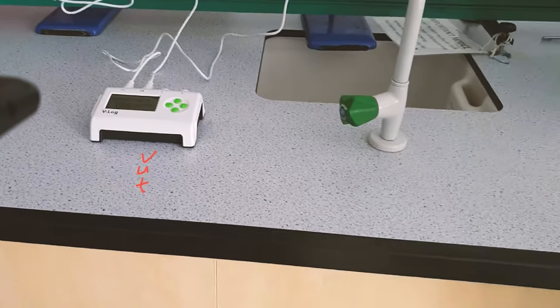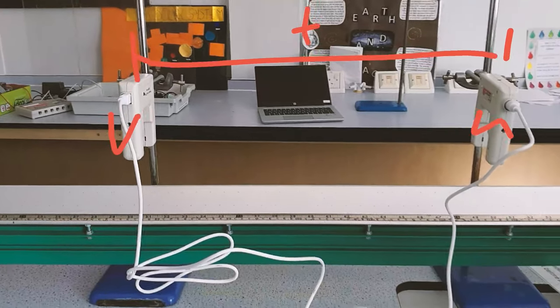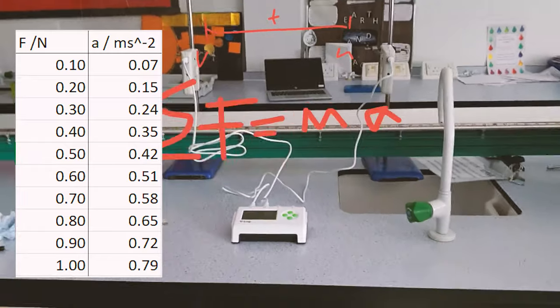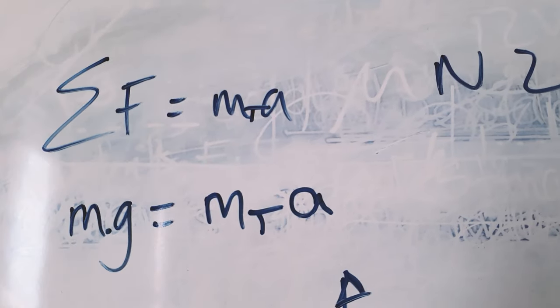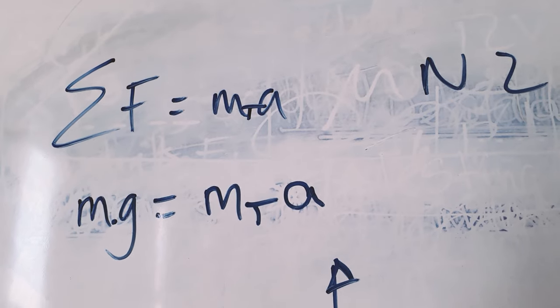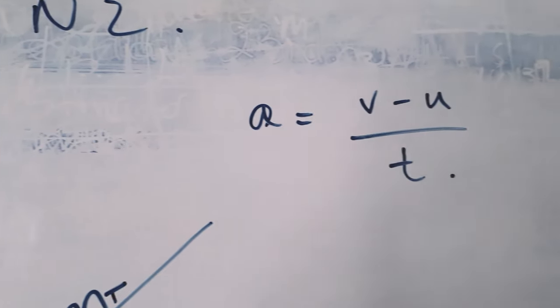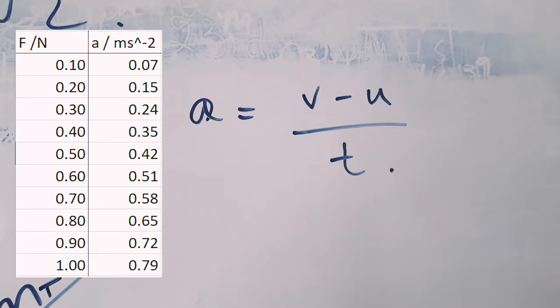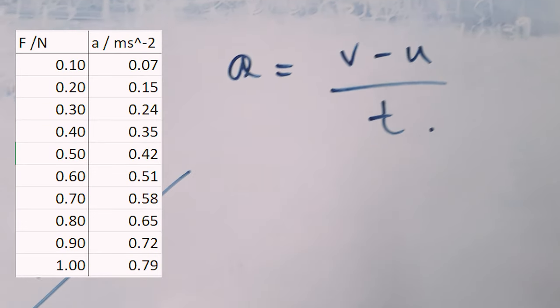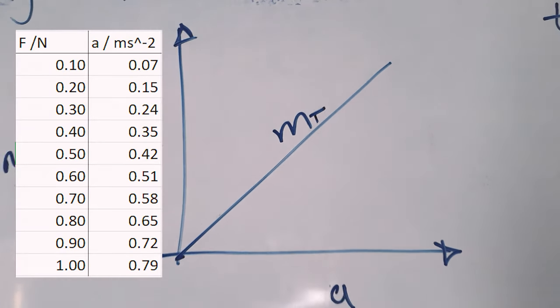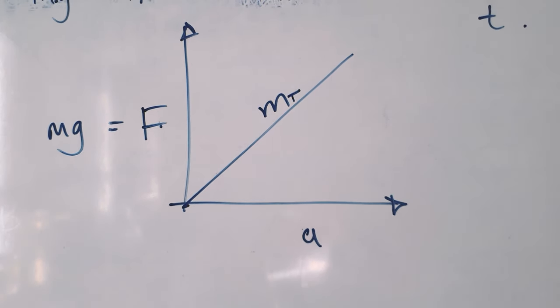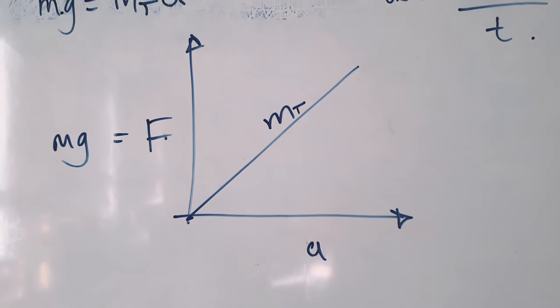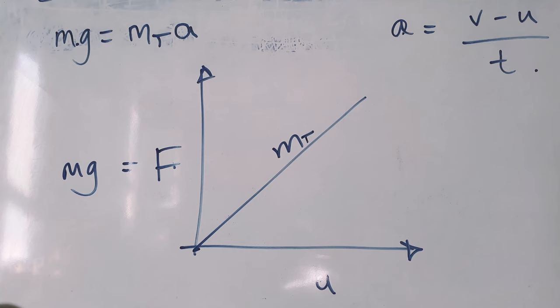So calculate acceleration for each different accelerating mass. And then you've got a range of accelerations for each resultant force. Now that looks very similar to the equation for a straight line, y equals mx. So with your calculated accelerations, plot that against your calculated accelerating forces. That's the little masses, the 10 grams to 100 grams on the pulley. That's your y-axis. Acceleration is your x-axis. And hopefully the mass of the whole system, the total mass, is the gradient.